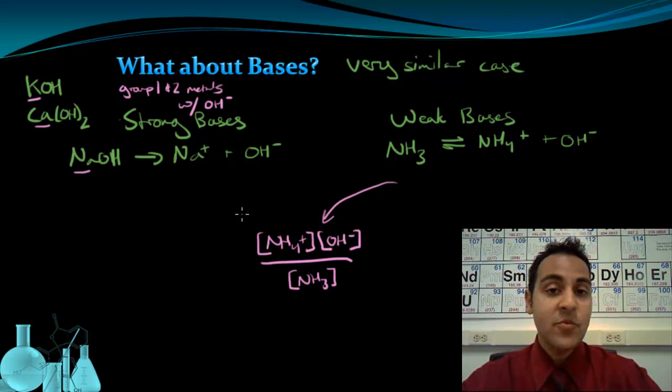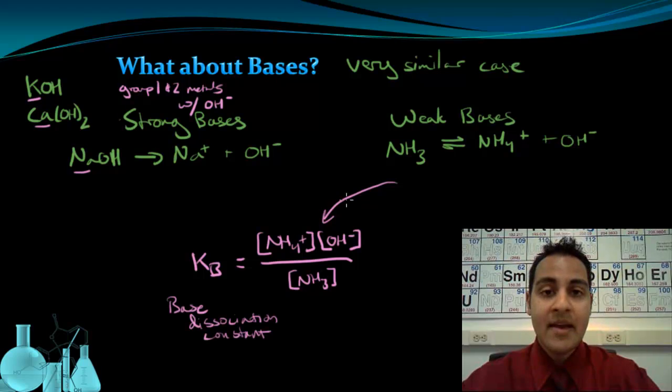And for the acid, we called it Ka because it's the acid dissociation constant. For bases, we call it Kb. And this is the base dissociation constant. And it has the same meaning for every case. The higher Kb means the stronger the base. The lower the Kb, the weaker the base. And just like Ka's, the Kb's have been determined for a number of bases, and you can look them up on a data table. The Kb for ammonia, for example, is 1.8 times 10 to the negative 5th.